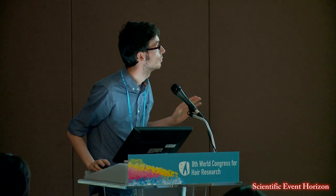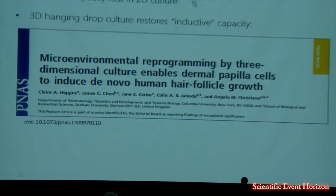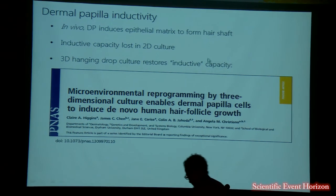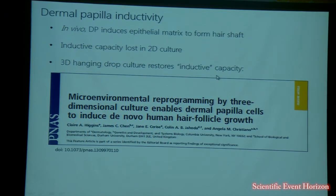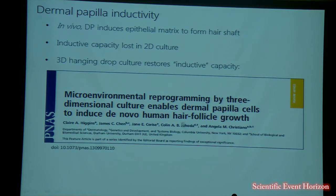As everyone in the previous talks has pretty much gone over, so I can skip through this: the in vivo dermal papilla induces the epithelial matrix to form the hair shaft. This inductive capacity is lost in 2D culture, and as Dr. Higgins showed, by 3D handling we can partially restore this inductive capacity. The work I'm going to present now is the attempts of Professor Hohen's lab to take this further.